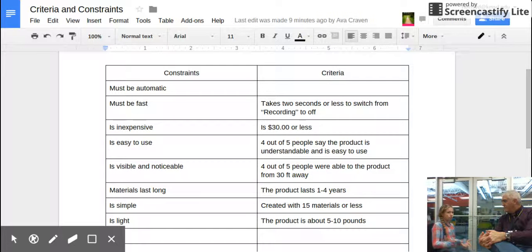Some of our constraints include: it must be automatic, it must be fast, it is inexpensive, it's visible and noticeable, materials last long, it's simple, and it's light, as in light and white. But we'd also like it to be bright. That's a good idea.